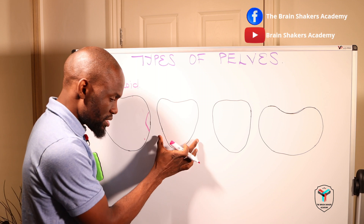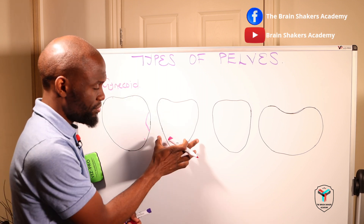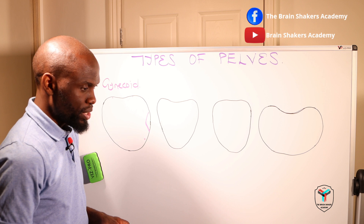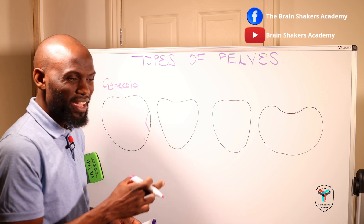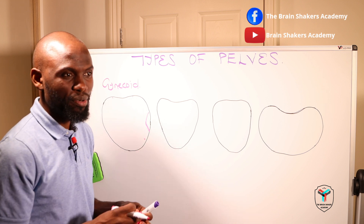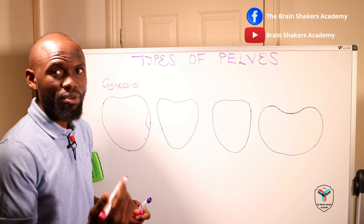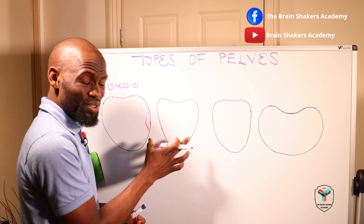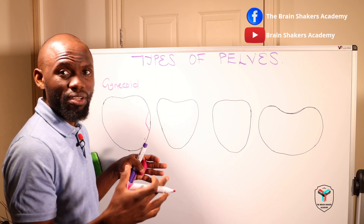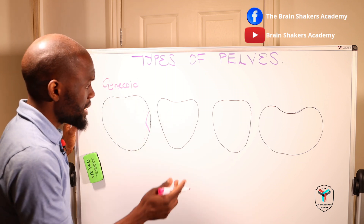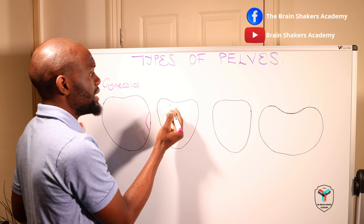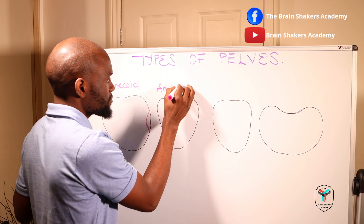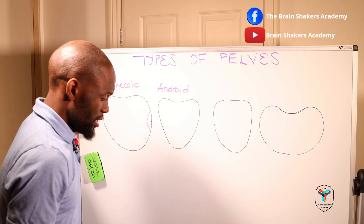The second type of pelvis is what we refer to as the android pelvis. The android pelvis is referred to as a masculine type of pelvis because in most cases it is found in men. You will still find it in women, usually of shorter stature and heavily built. We label this the android pelvis.